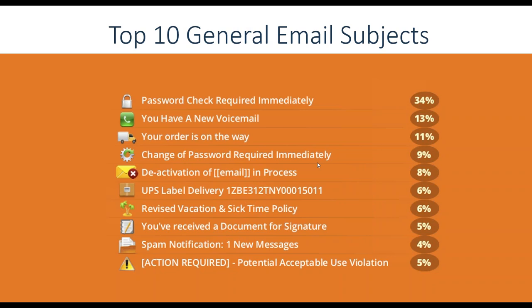Here is a list of top 10 general email subjects and percentages — like a Family Feud survey — of subjects we often see for phishing emails. You'll see things like: password check required immediately, you have a new voicemail, your order is on the way, you received a document for signature, a potential acceptable use violation. One big thing about all of these is that they focus on urgency. They're all trying to focus on something you might care about. Your order is coming — everyone's ordering from Amazon. Or if you need a password change, everyone's sensitive to cybersecurity. The hackers take advantage of that.